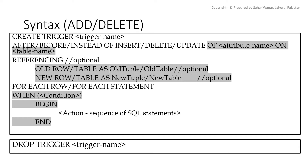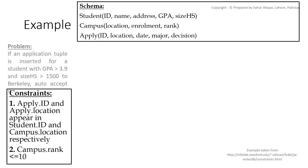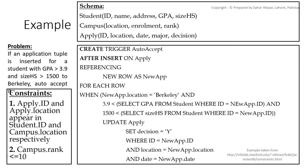Let's turn to examples. We have three tables: Student, Campus, and Apply. Student has id, name, address, GPA, and the number of students of the high school where the student studied. Campus has location, number of enrolled students, and rank — where rank 1 is the highest and 10 is the lowest. There is a constraint that campus rank should always be less than or equal to 10.